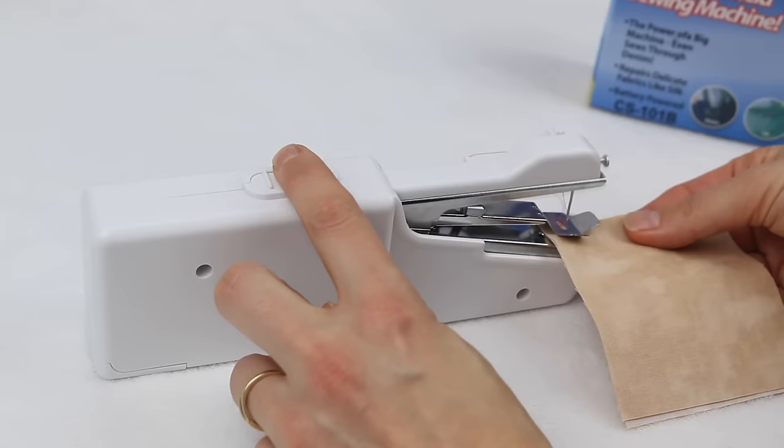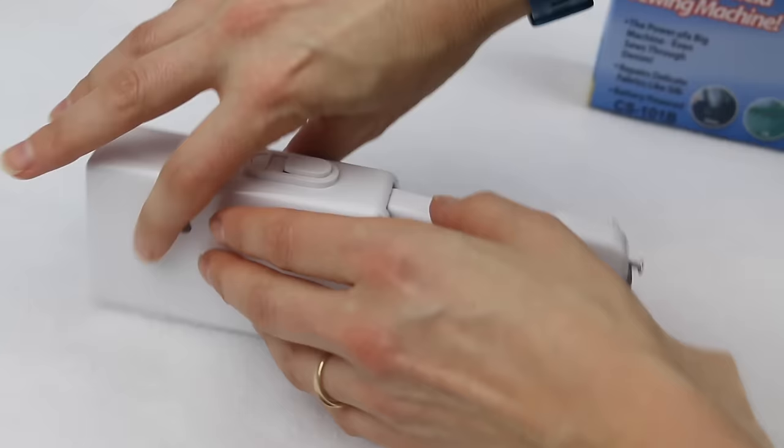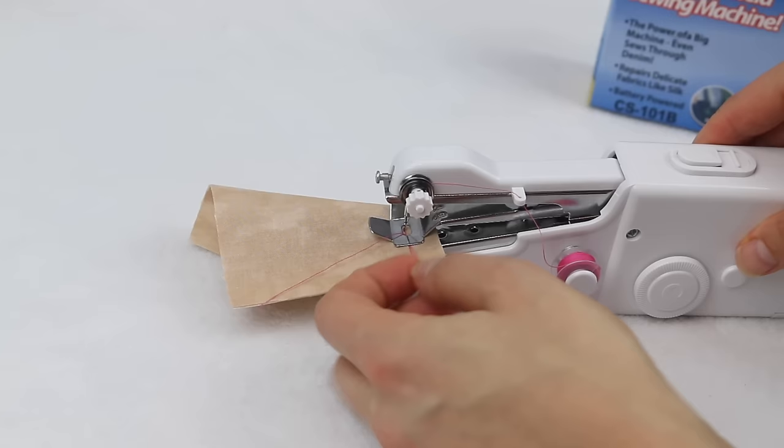So it started sewing. Now if you've just threaded the machine up, what I suggest you do, because you're going to have that thread tail that's going to be getting in the way there. If you just grab that thread and just pull that all the way through, that will keep it out of the way of getting tangled up in your stitching there.